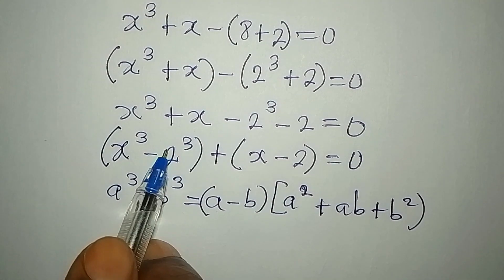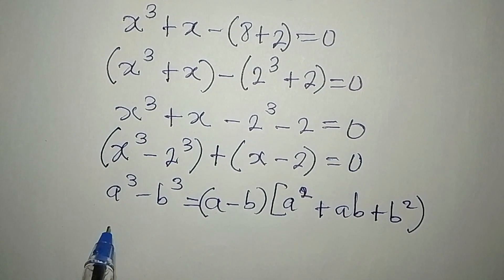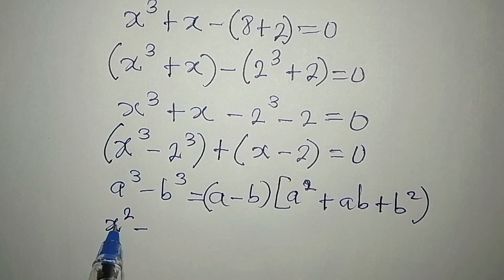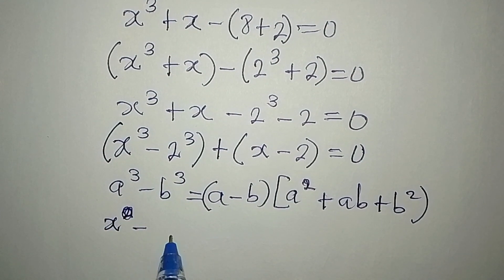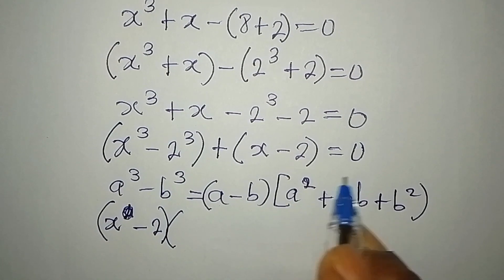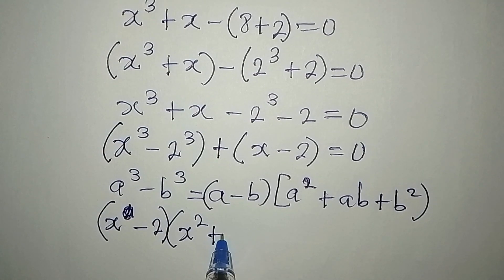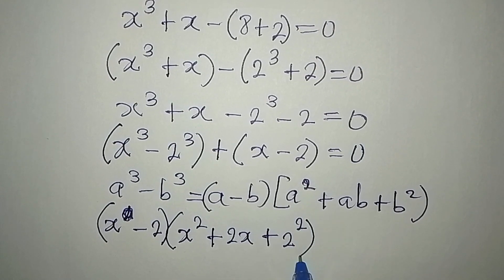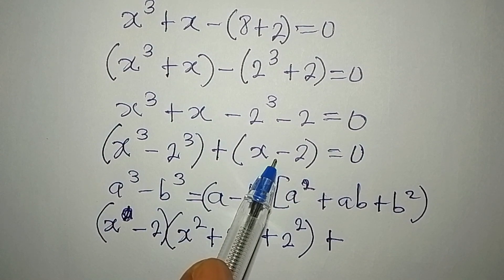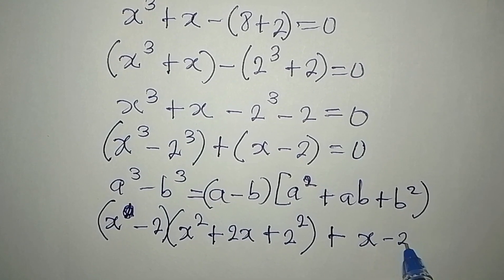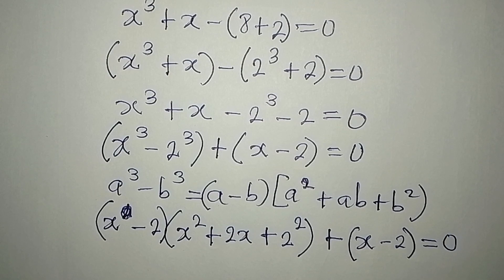This means our a is x and our b is 2. Let's substitute. In place of a minus b we write x minus 2, close bracket. In the second bracket: a squared is x squared, plus ab is 2 times x which is 2x, plus b squared is 2 squared. Close this. Then we have plus what we had over there: x minus 2, and this equals zero.